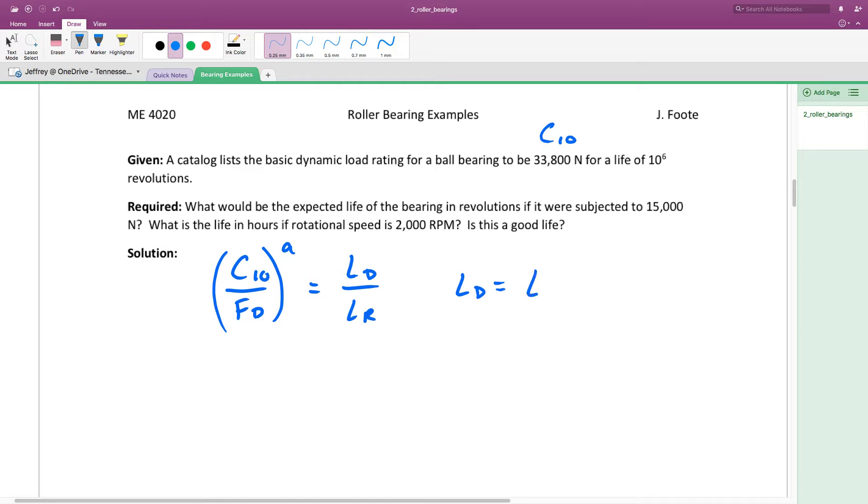We know this is a ball bearing, so a is three. C10 is given, Fd is given, and Lr, the rated load, is also given. So this is a direct calculation, and out of this we get a design life for this bearing of 11.4 times 10 to the 6 revolutions or cycles.